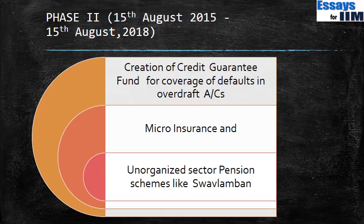Another financial service targeted in the second phase is micro insurance — insurance of small amounts for small things — a sector which has been very neglected in the country till now. Similarly, while there are pension schemes for the organized sector such as the New Pension Scheme for new government employees, in the unorganized sector there is nothing like that. People working in the unorganized sector do not benefit from any pension scheme, which means they are bereft of any social security — very important for a life with dignity after retirement. So the government is targeting an unorganized sector pension scheme, similar to earlier schemes like Swavlamban.